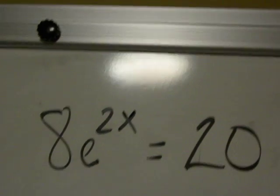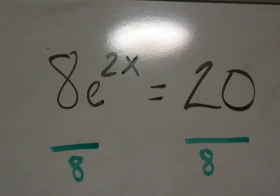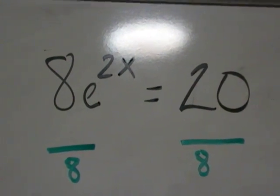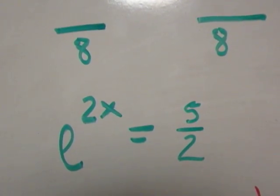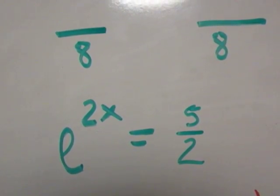But first of all, let's get rid of the 8. We'll divide both sides by 8, and the fraction 20 over 8 will reduce nicely to 5 over 2. So now I have e to the 2x power equal to 5 over 2.